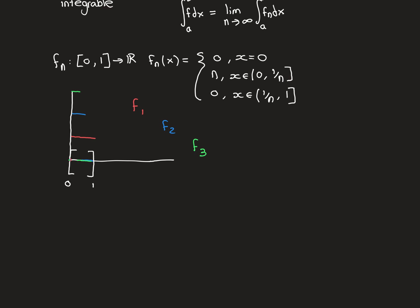As you go on, the amount of the domain being mapped onto zero gets bigger and bigger, and the bit that isn't being mapped onto zero gets smaller and smaller but is mapped onto a higher number. So for f4 you'd have zero to one-quarter being the only bit not mapped onto zero, going up to four; for f5, zero to one-fifth, mapped onto five; and so on.